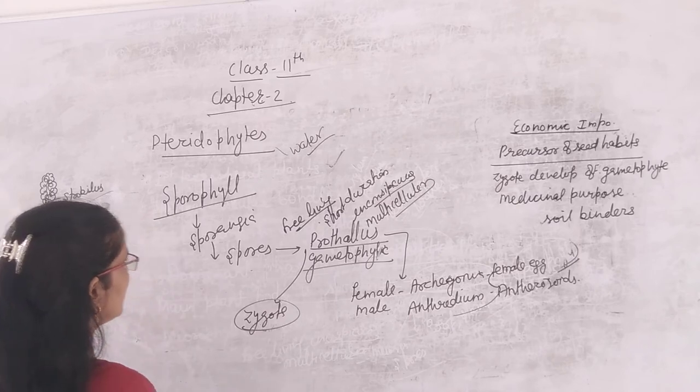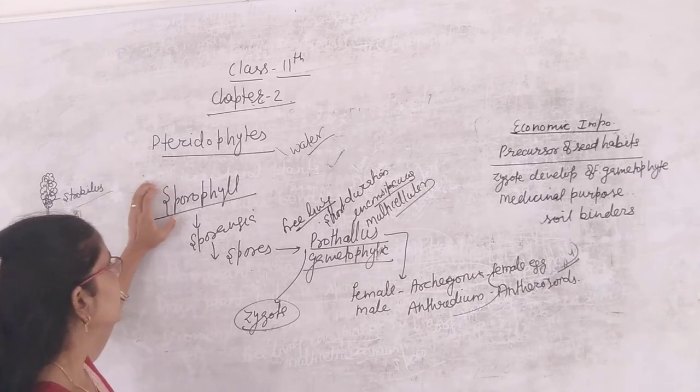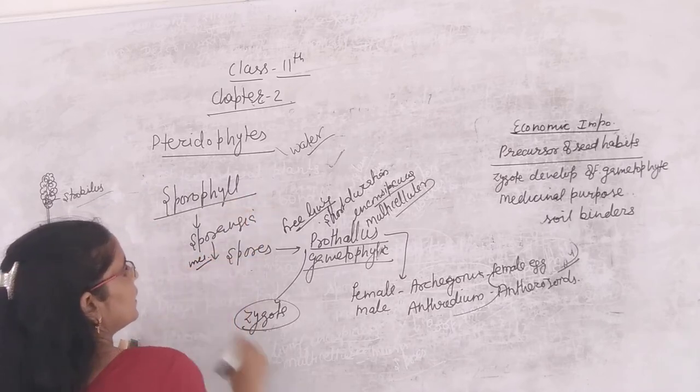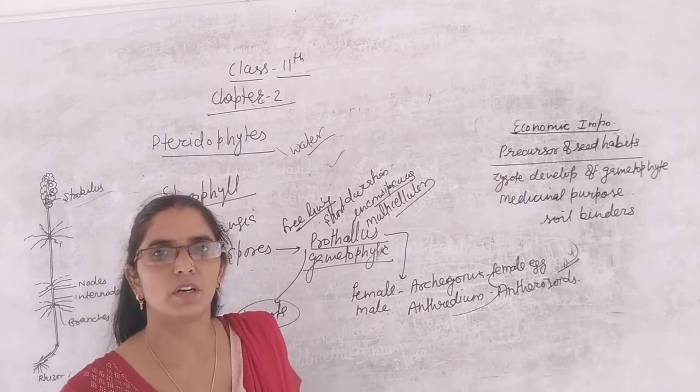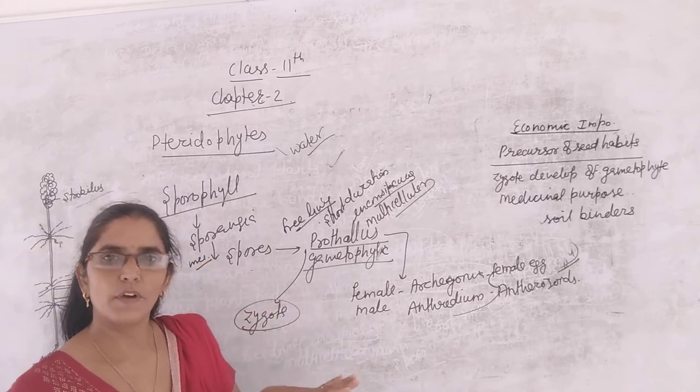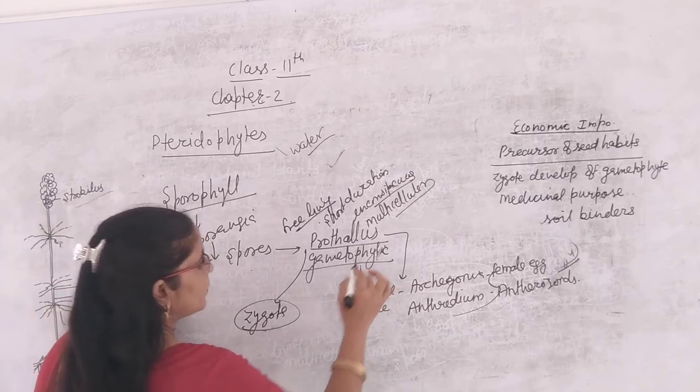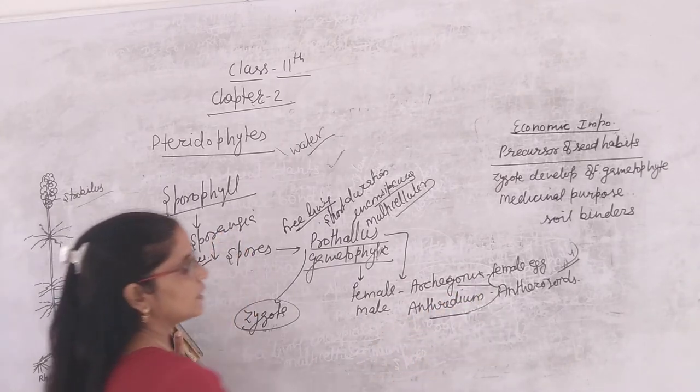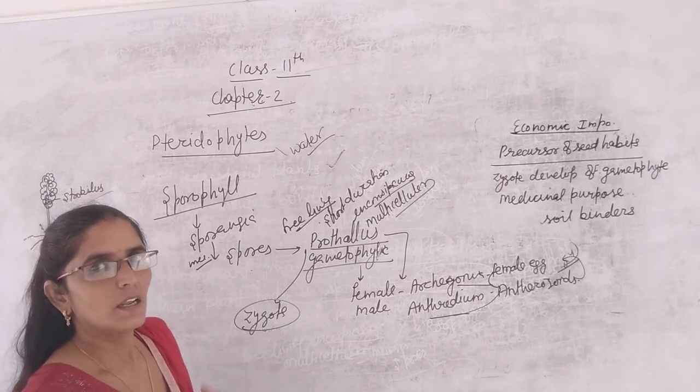So I hope you understand: first sporophyll or sporangia-bearing leaves, they sometimes form strobili or cone. They give rise to the sporangia or contain sporangia. These sporangia through meiotic division produce spores. These spores form a free-living, short duration, inconspicuous multicellular structure that is known as gametophyte, also called prothallus. Gametophyte is short-living and is dependent on sporophyte for nutrients. It is the dominant phase - sporophytic plant body. Gametophyte bears male and female sex organs: archegonium and antheridium. Archegonium produces female eggs and antheridium produces antherozoids. They form zygote which develops into sporophyte.